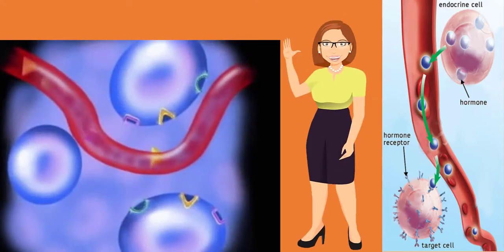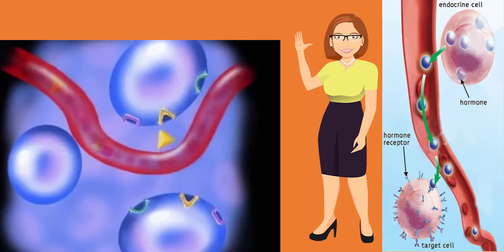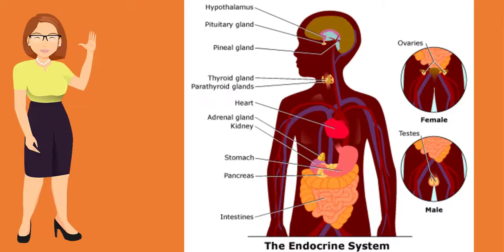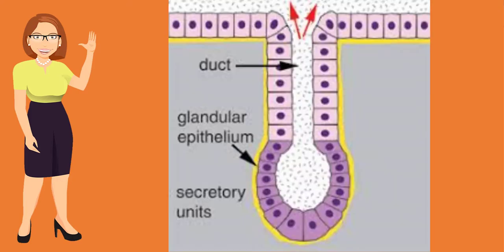The examples of endocrine glands are thyroid glands, parathyroid glands, adrenal glands, pituitary glands, etc. Now let's move towards the exocrine glands.